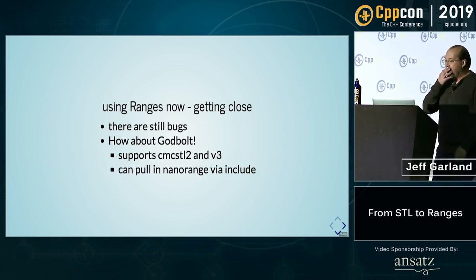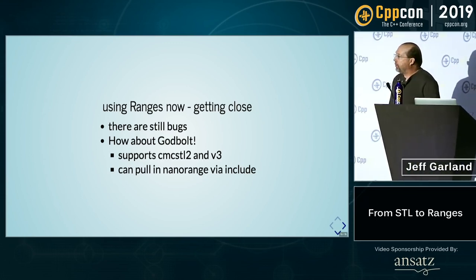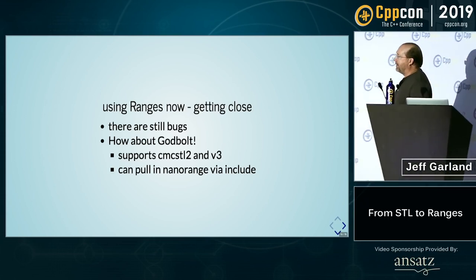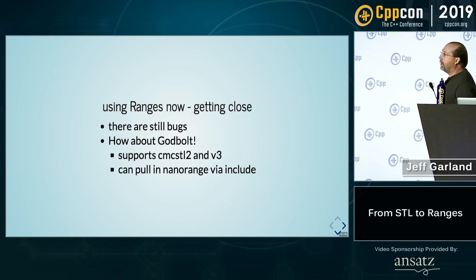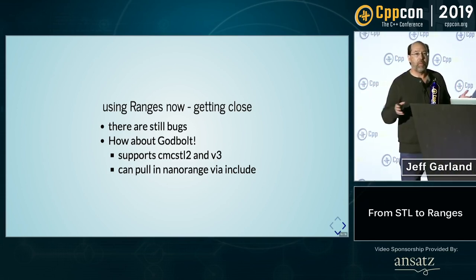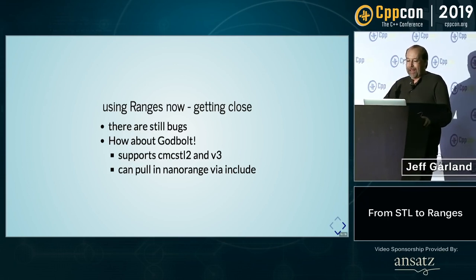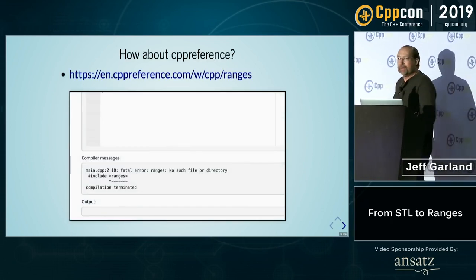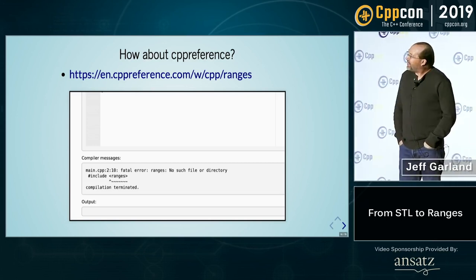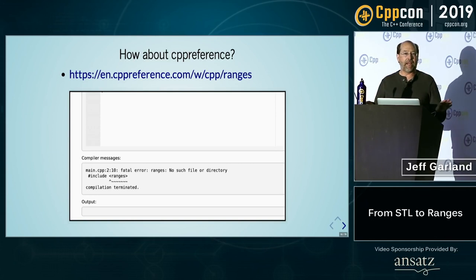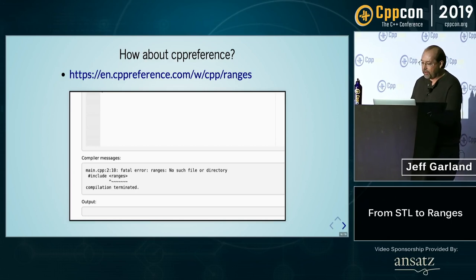How does it feel to use ranges now? I think we're getting close. There are still bugs in the implementations of course. Can we use it on Godbolt? Yes, we can. Both CMC STL2 and V3 are libraries that are selectable, so you can play around with range code there. If you don't know about Godbolt, try and find Matt Godbolt — he's here somewhere. Tristan actually showed me a neat trick: you can actually pull in NanoRange by doing an include to the GitHub, which is awesome. As for CPP reference — they use Coliru as their back end for compilation, so they have code examples but it doesn't actually compile. Overall, I'd say things are in a state where you can definitely get started and experiment with C++20 ranges.